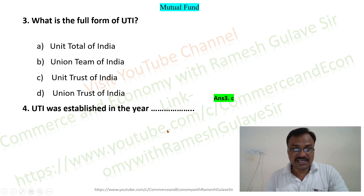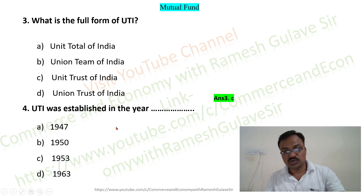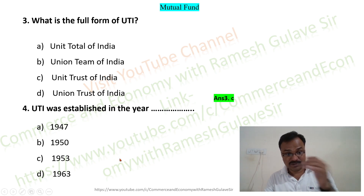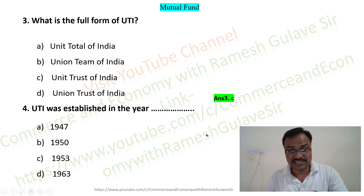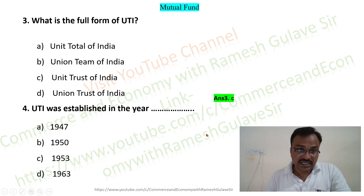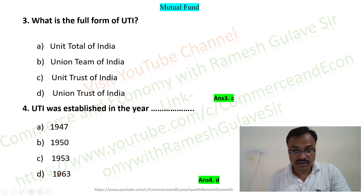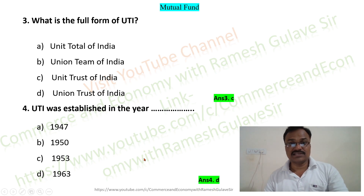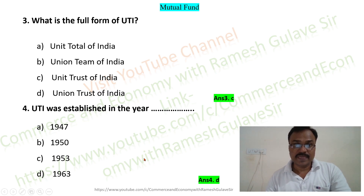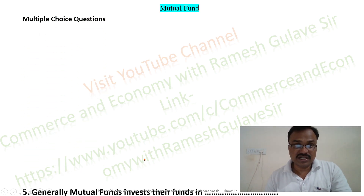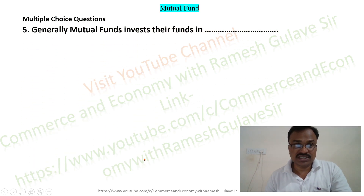The next question says: UTI was established in the year — and the options are 1947, 1950, 1953, and 1963. Friends, UTI was established in 1963, so option D is the right answer.